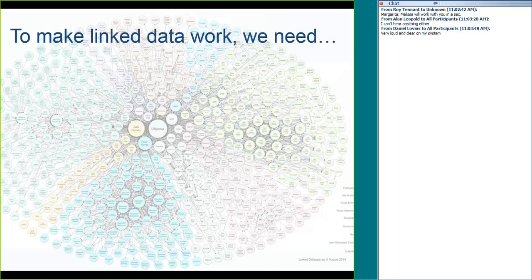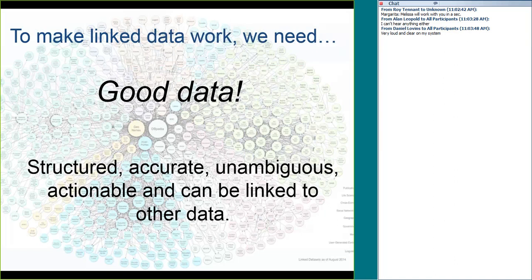The message is fairly simple: to make good linked data, we need good data — data that is structured, accurate, and everything else mentioned on the slides. You can achieve these goals with MARC, but they aren't an automatic consequence of current cataloging standards. What we'll walk through today is a set of examples and arrive at a list of recommendations for converting MARC records to linked data more easily by following a few already-defined conventions.